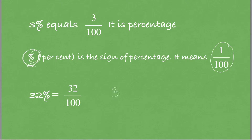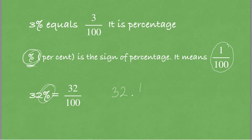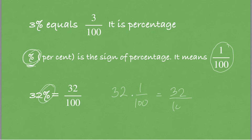If we write 32% in multiplication form — since the percent sign means 1 out of 100 — we get 32 times 1 out of 100, which equals 32 out of 100.